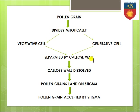When the developmental process starts, first of all the callose wall gets dissolved, because if it does not dissolve the procedure cannot move forward. So the callose wall gets dissolved.